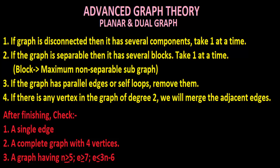Separable, we already know that if the vertex connectivity is 1, then it is known as separable. Number 3, if the graph has parallel edges or self-loops, remove them. If there is any vertex in the graph of degree 2, we will merge the adjacent edges.